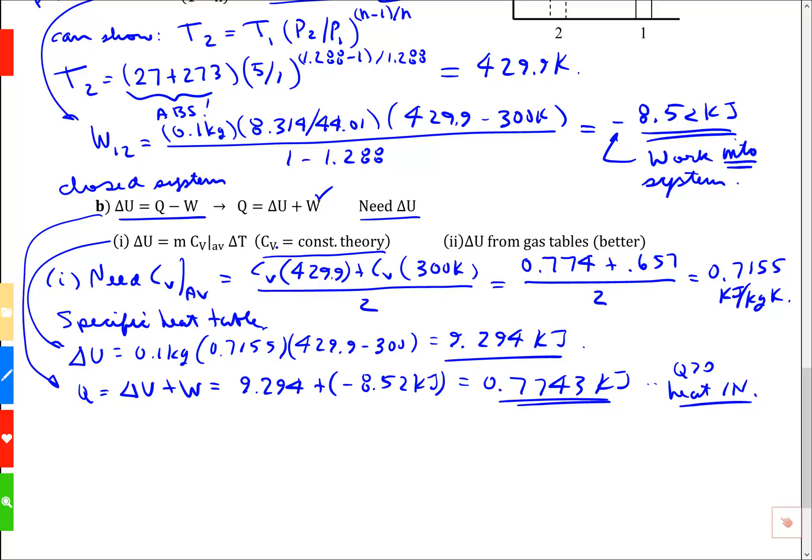That was one way. The other way is delta u from the gas tables. This one's more precise. Ideal gas table.